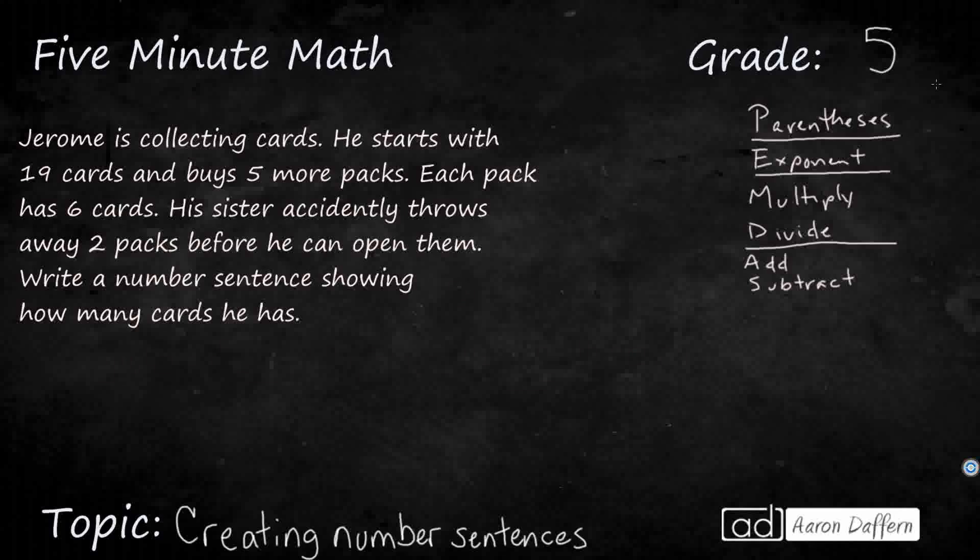Now we have Jerome. He's collected some cards. So he starts with 19 cards, buys 5 more packs. We have 6 cards in a pack, and then the sister actually accidentally throws away 2 packs. So we can write a number sentence showing how many cards he has. So there's two different ways we could do this. Let's make that C. So we can say C cards he has.